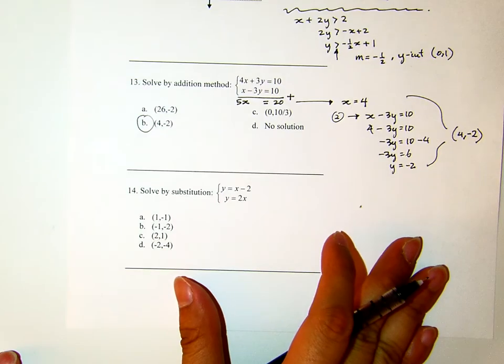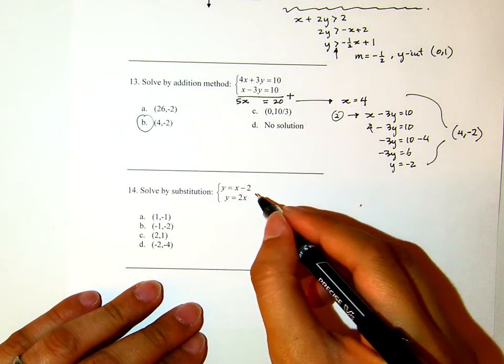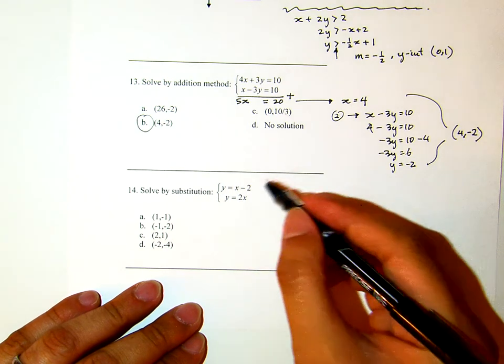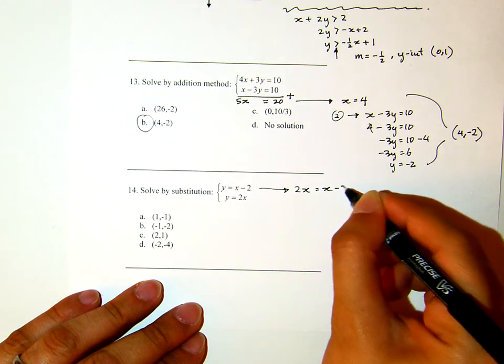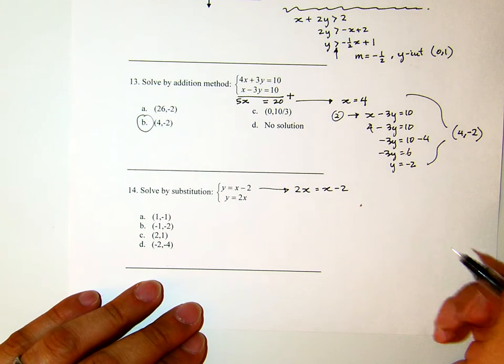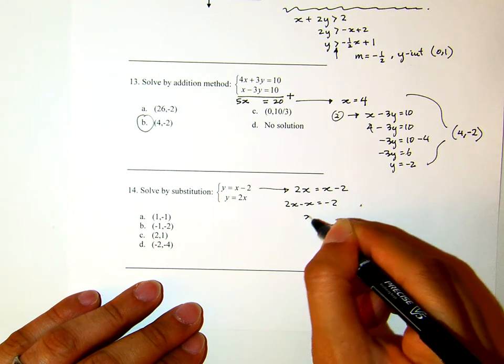Number 14: solve by substitution. Again, they give you the hint which is not necessary. We know that if we are given a system of equations in which one of the variables is isolated, in this case actually both equations have y isolated, then the best method to solve this system will be by substitution. y equals x - 2 and y equals 2x. So if I replace the y on the top by the y at the bottom, this is what I get.